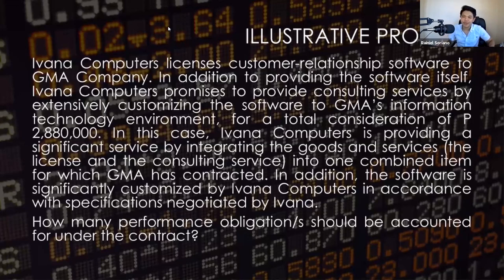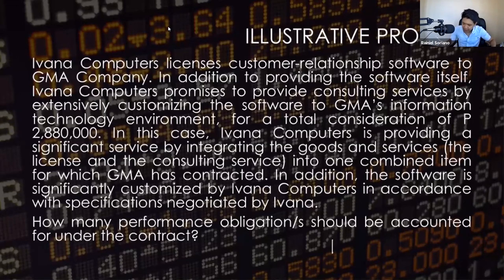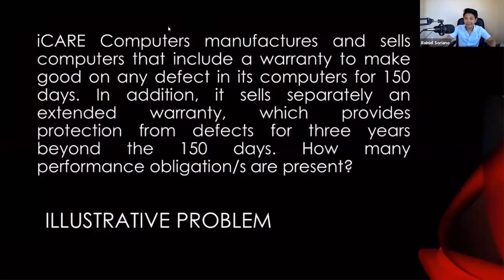So if GMA will not buy the license because Ivana refuses to provide the consulting service, Ivana cannot sell the license without the consulting service. Since we cannot sell one performance obligation without selling the other, these obligations are related — they are not distinct. Therefore, we should combine them as one. Our final answer here is only one performance obligation.